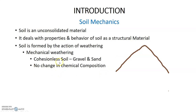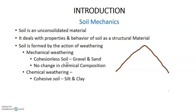Mechanical weathering produces cohesionless soils such as gravel and sand. Chemical weathering involves chemical processes using oxygen, chemicals, and water, and produces silt and clay.